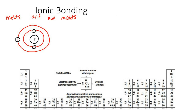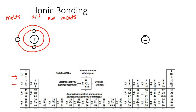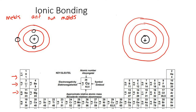Now let's look at chlorine. It has a positive nucleus, and it's in energy level number three, so it has three energy levels. In energy level number one it has two electrons. In energy level number two it has eight electrons.